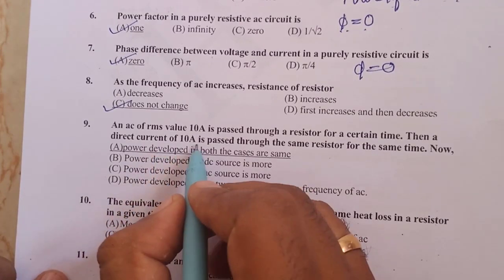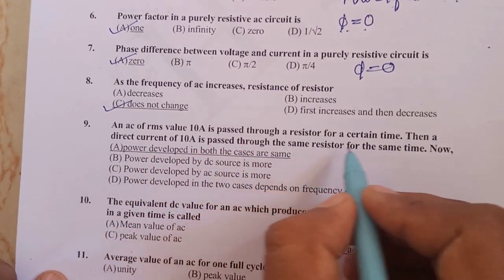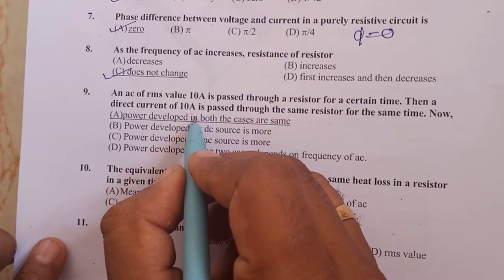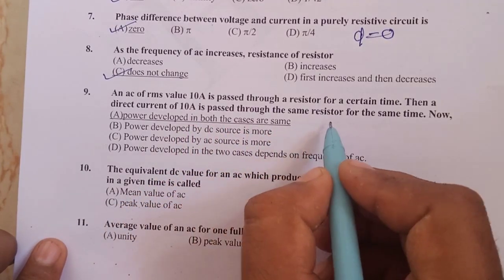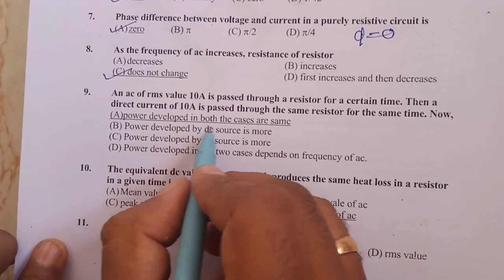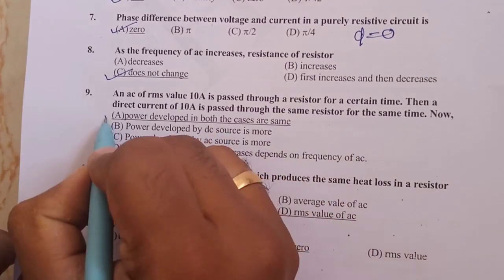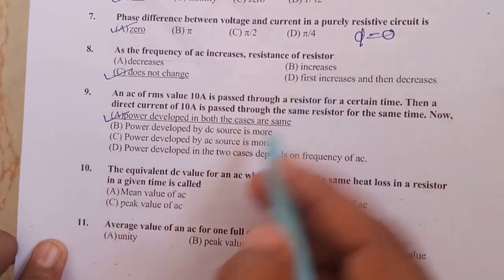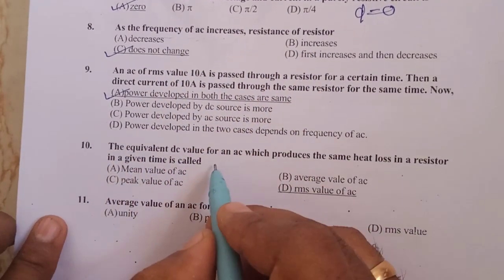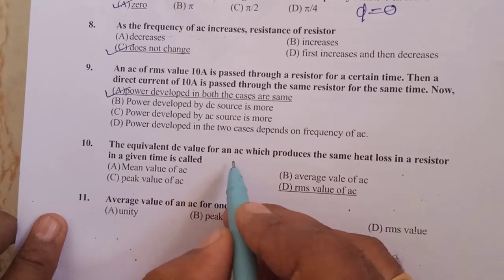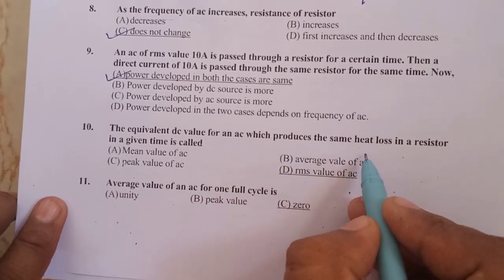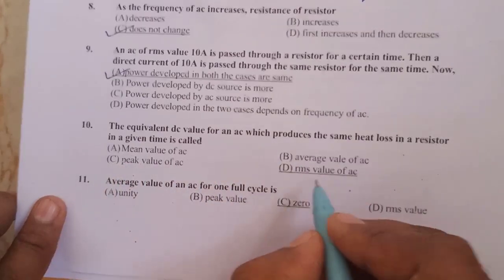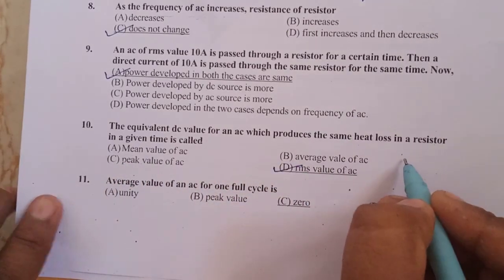An AC of RMS value 10 ampere is passed through a resistor for a certain time, then a direct current of 10 ampere is passed through the same resistor for the same time. The power developed in both cases will be the same because the resistance does not depend on frequency. The equivalent DC value for an AC which produces the same heat loss in a resistor in a given time is called the RMS value of AC.